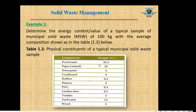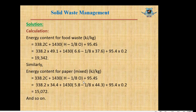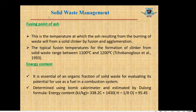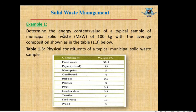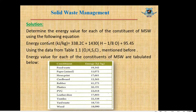From this table, using this data, we will calculate the energy content. To determine the energy content, we use Dulong's formula: Energy content (kJ/kg) = 337C + 1,428(H − O/8) + 9.3S. To determine the energy value for each constituent of municipal solid waste, we replace the values of C, H, O, and S from Table 1.1.